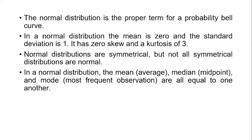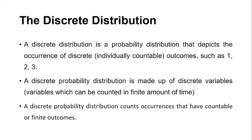Normal distributions are symmetrical, but not all symmetrical distributions are normal. In a normal distribution, the mean (average), the median (midpoint), and the mode (most frequent observation) are equal to one another. It means there is no difference between the mean, mode, and median in a normal probability distribution.